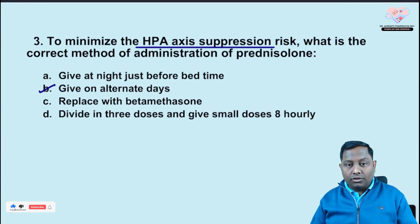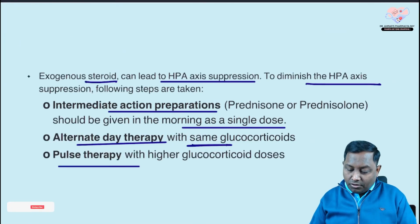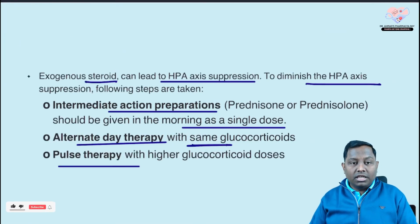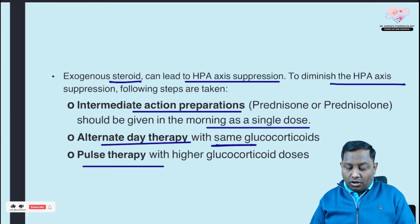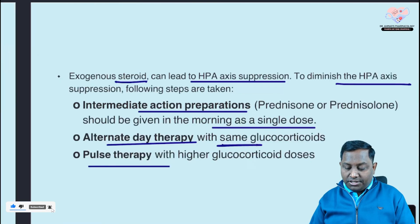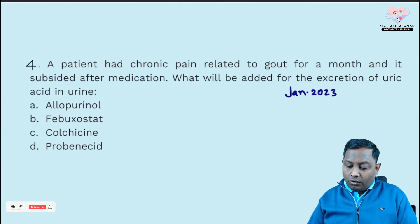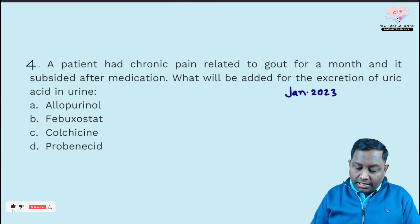Given the options — alternate day therapy, given at night just before bedtime, higher doses — the answer is alternate day therapy. You should not divide the doses and you should not replace the steroid. Alternate day therapy is the best method to minimize HPA axis suppression.